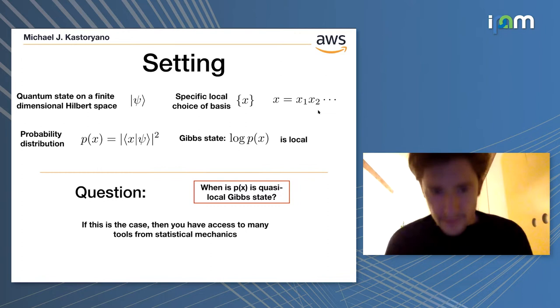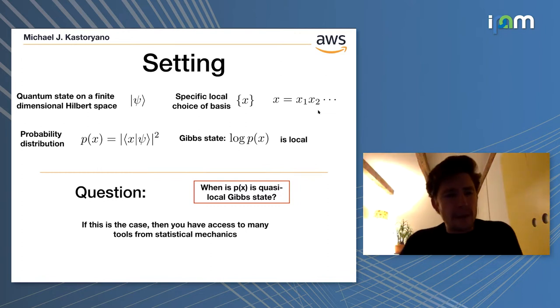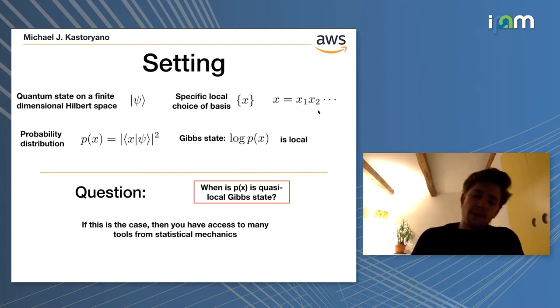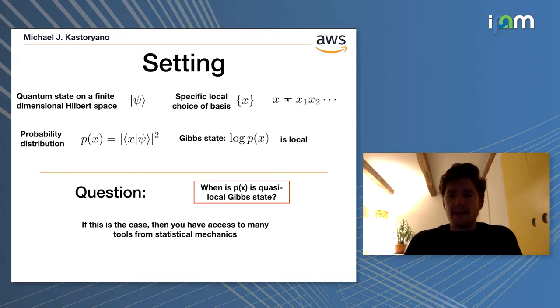As is customary in quantum information theory, we consider a finite dimensional Hilbert space on a finite lattice. At each point on the lattice, we associate a finite dimensional Hilbert space. And we're going to choose a specific basis X that takes values X1, X2, and so on. The object of study is the probability distribution that you obtain as a result of this choice of basis, the square amplitude of the wave function in this basis.